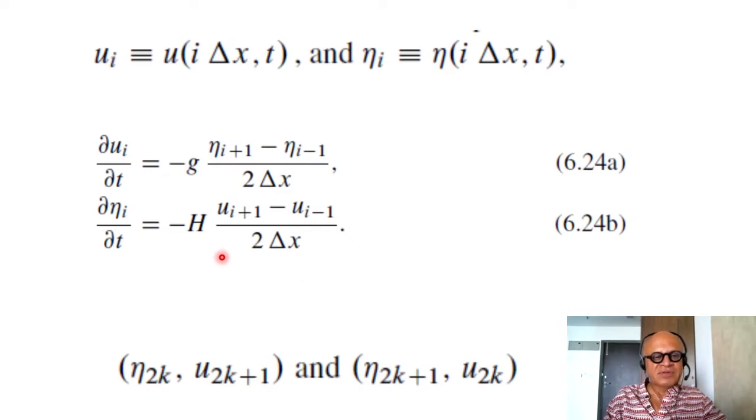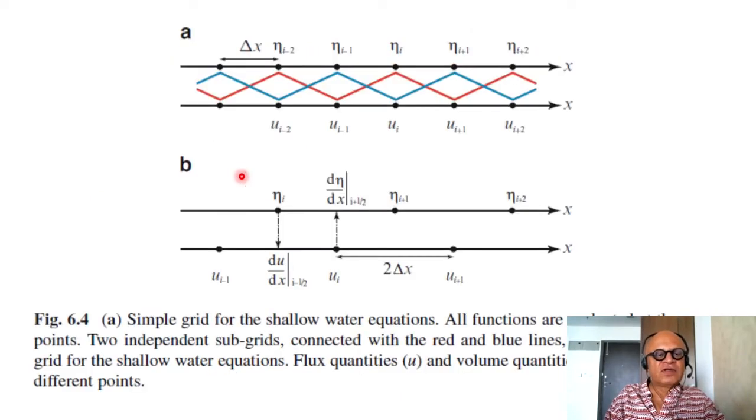But in reality, what happens, you are basically decoupling u and eta. So if you look at how you computed eta at 2k and u at 2k plus 1 and look at eta at 2k plus 1 and u at 2k, they are basically going to become mutually independent and not exchange any information.